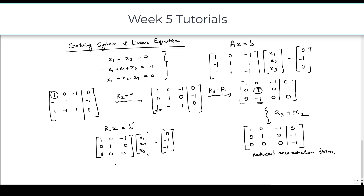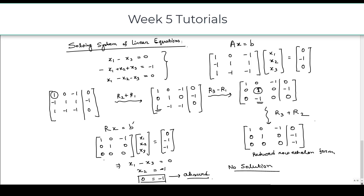From this, we get x1 minus x3 equal to 0, x2 equal to minus 1, and for the third row we get 0 equal to minus 1, which is absurd and not possible. So this system has no solution because from the last row we are getting 0 equal to minus 1, which is not possible.